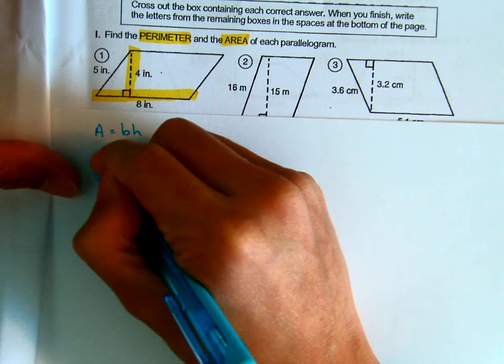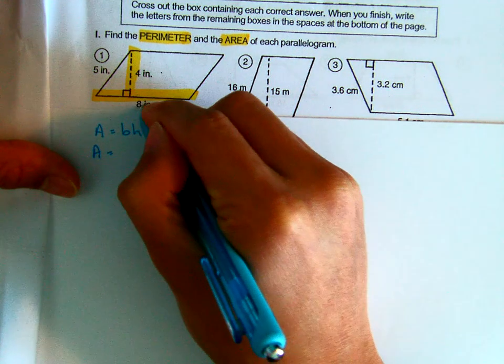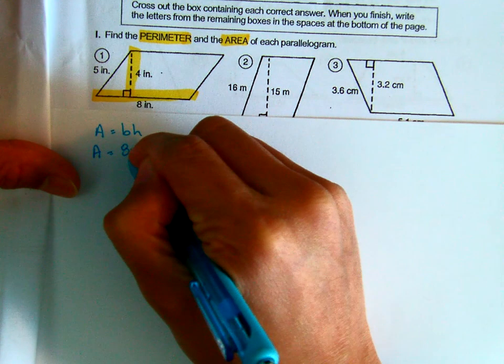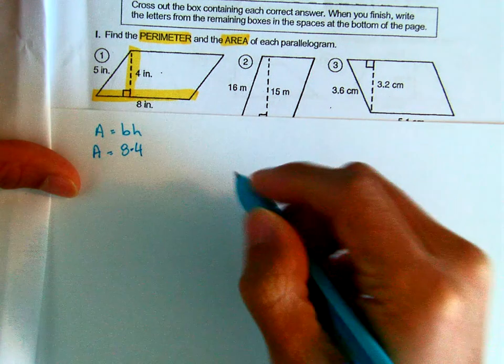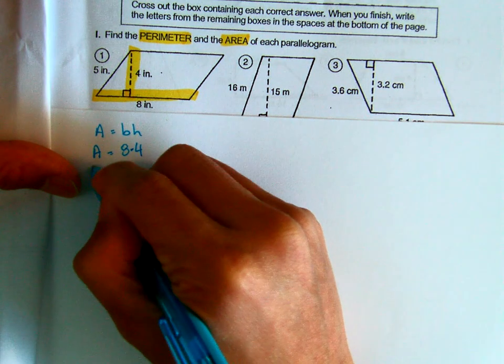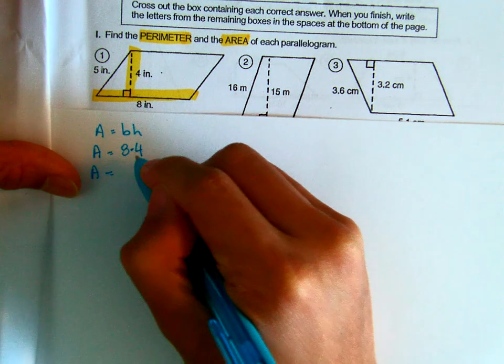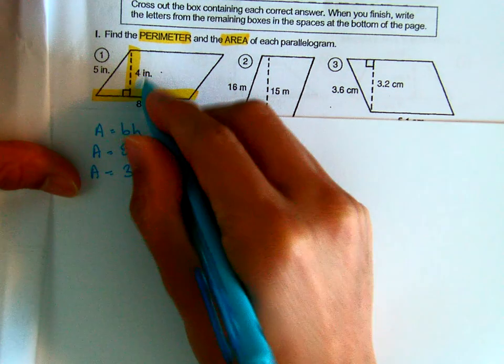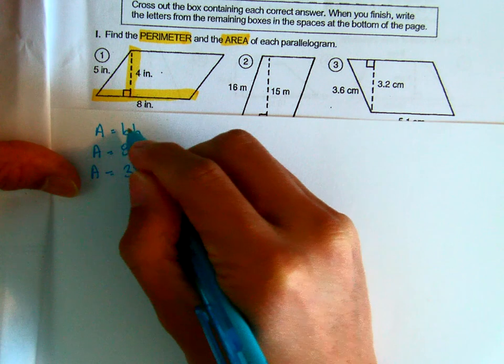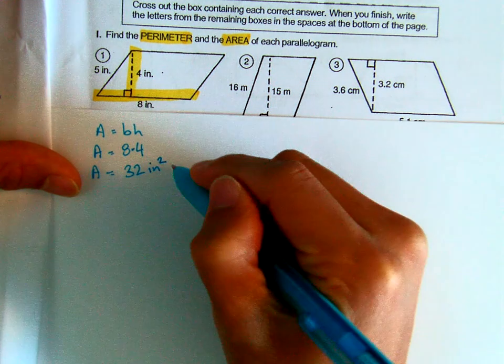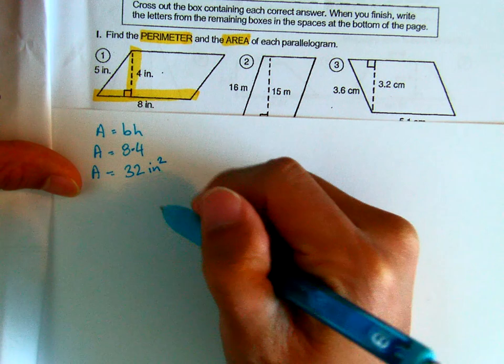We don't know the area so we're going to write A. In place of B we're writing 8. In place of H we're writing 4. 8 times 4. I'm using the little multiplication dot. You can punch that in your calculator if you want or if you already know what it is. It's 32, and because we multiplied 8 inches with 4 inches it's going to be inches squared or 32 square inches.